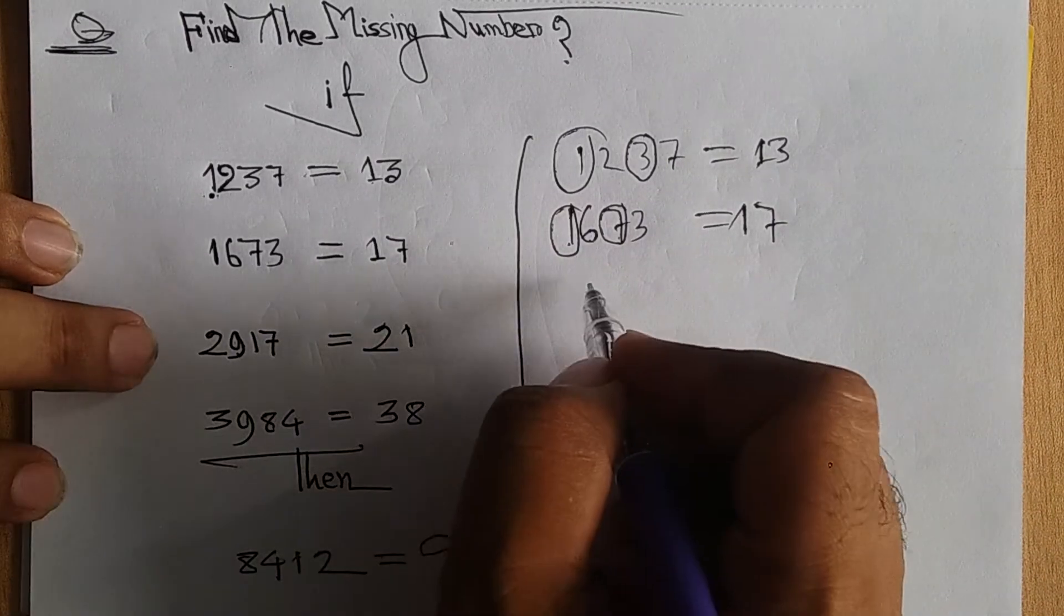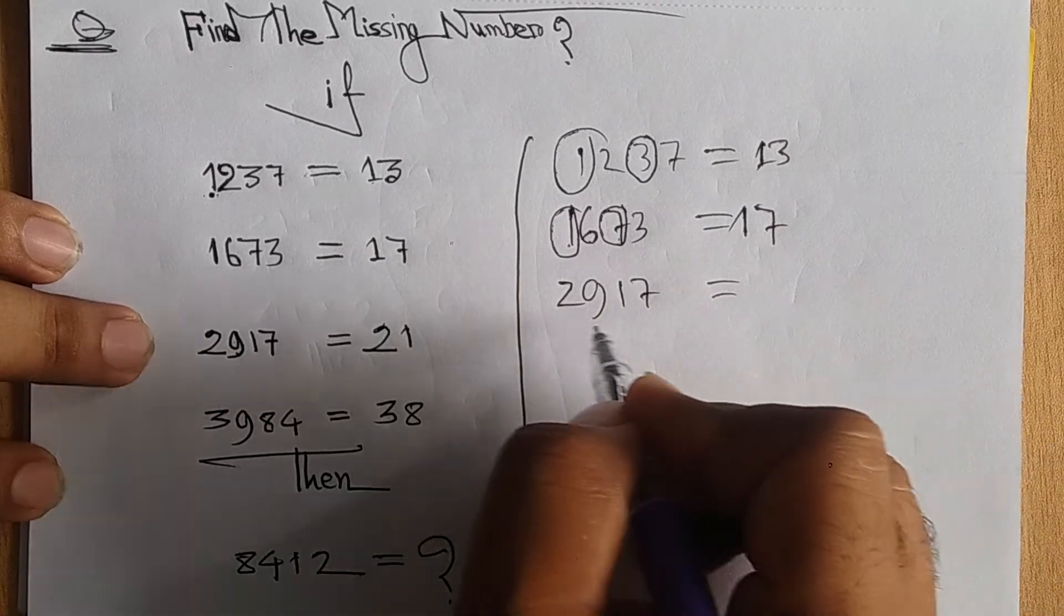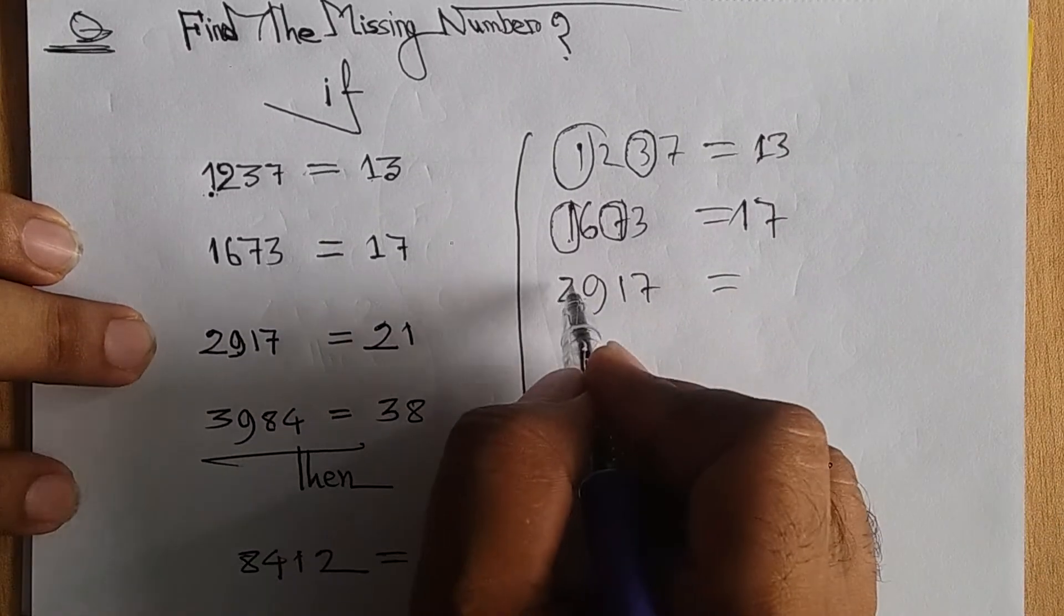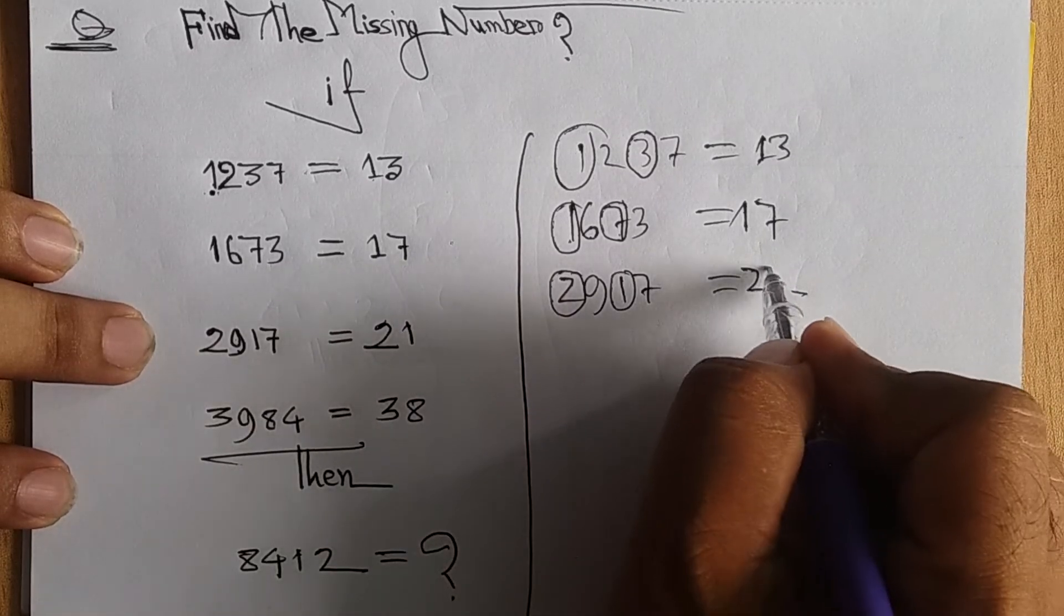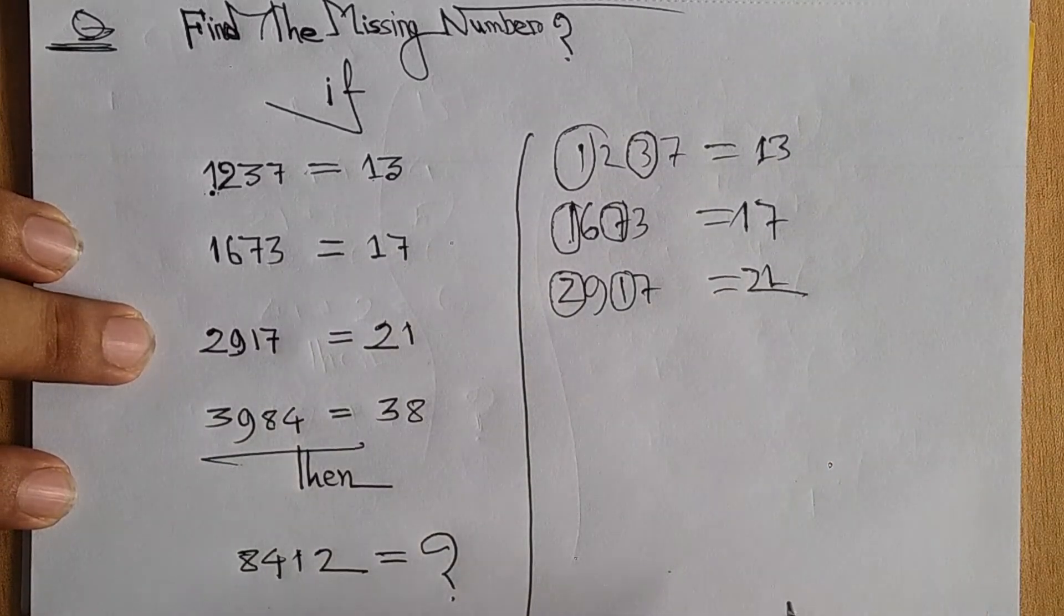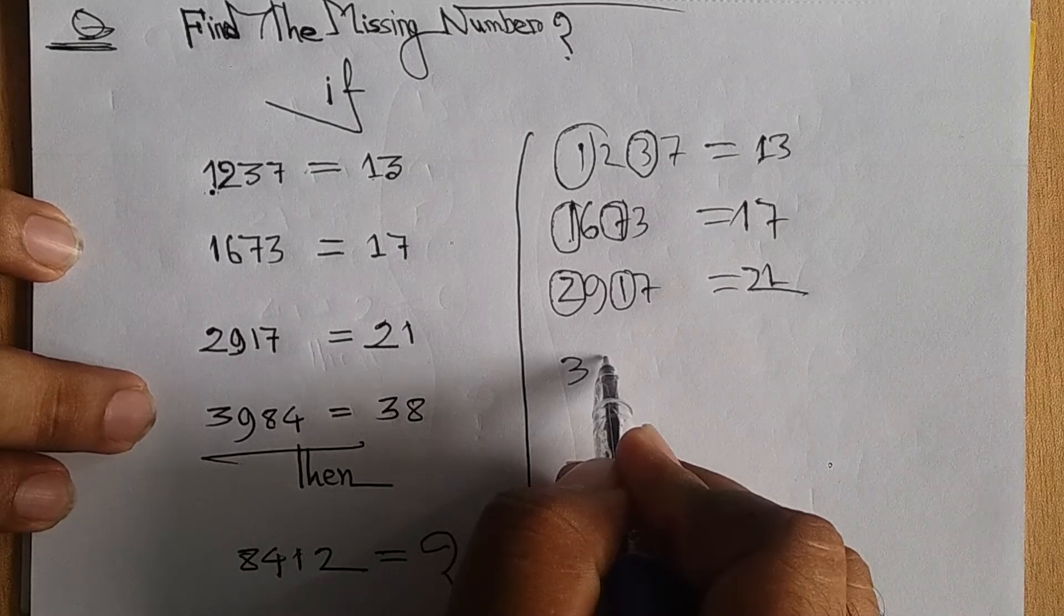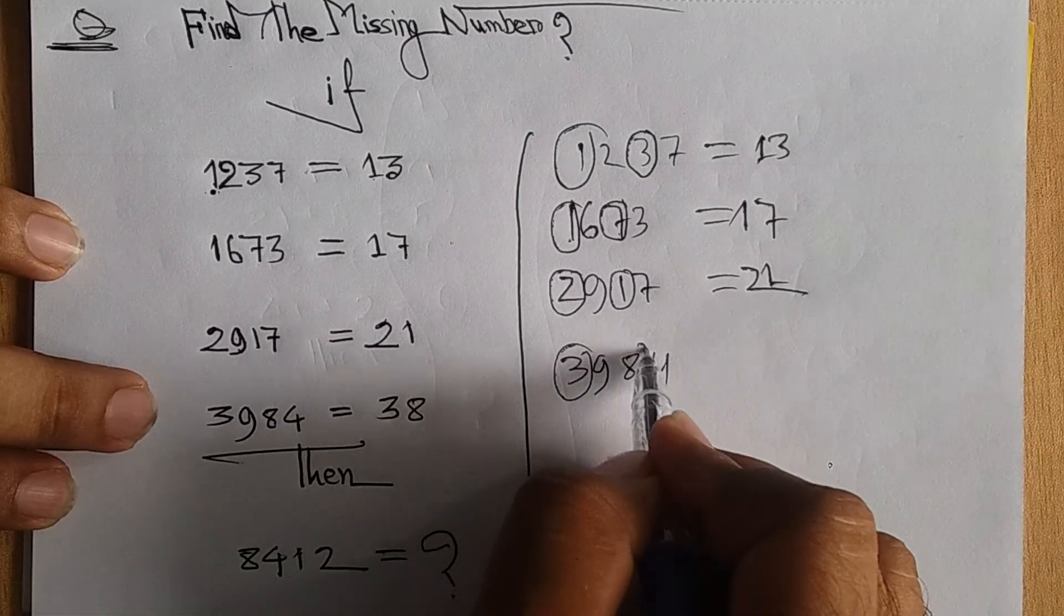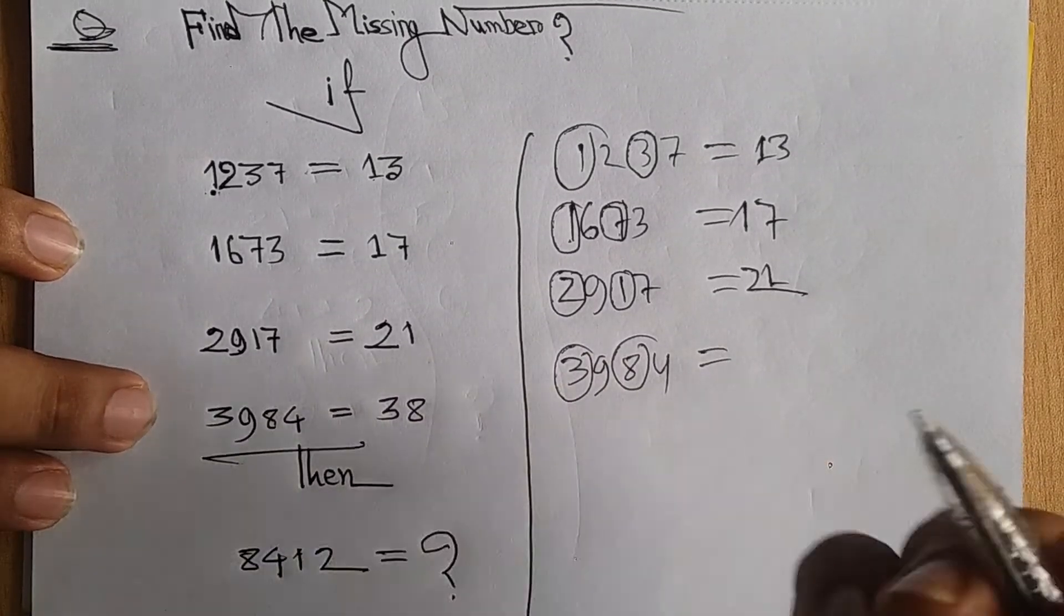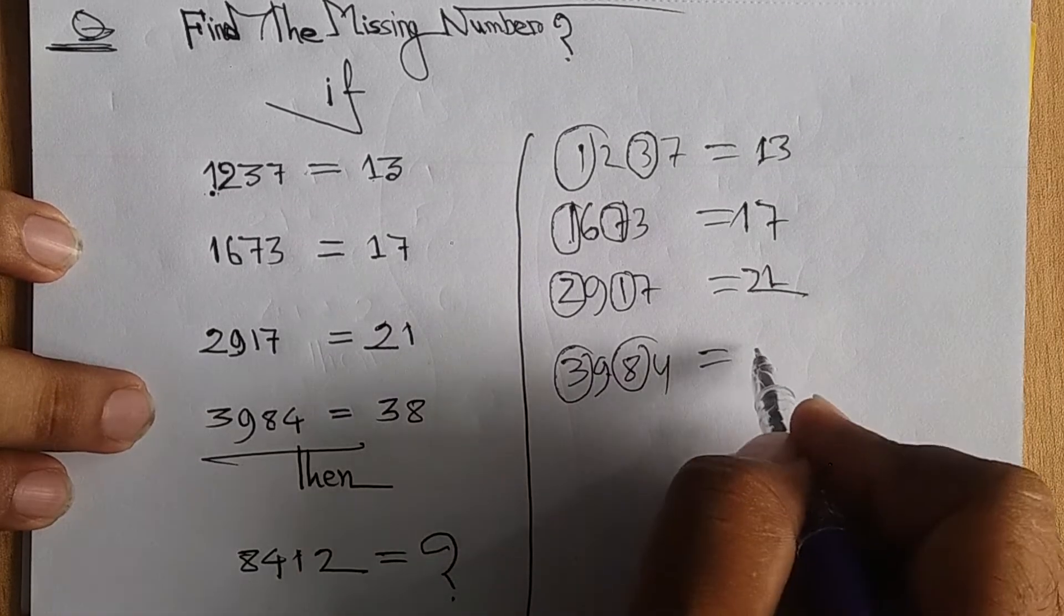For 29 and 17, add the digits. Then for 39 and 84, add all the digits together. The pattern continues through all the examples in the same way.